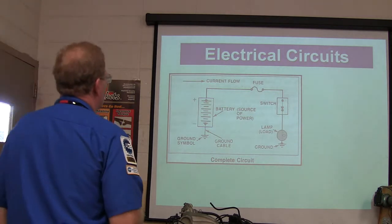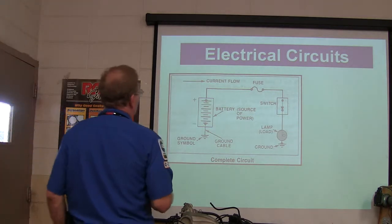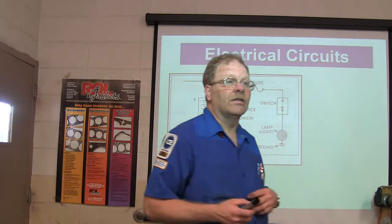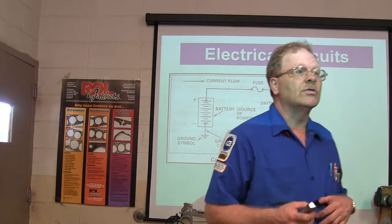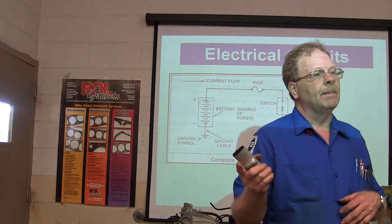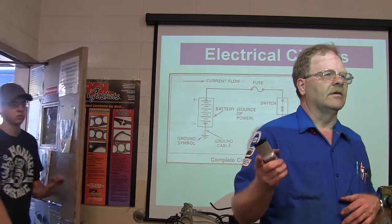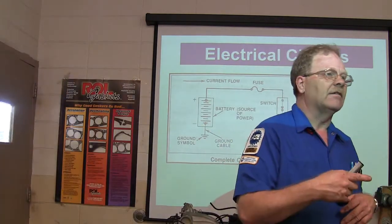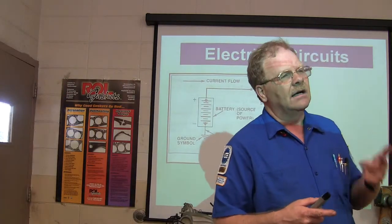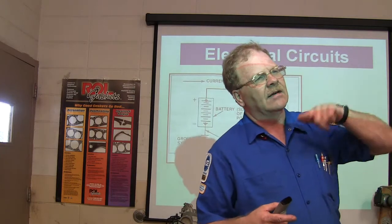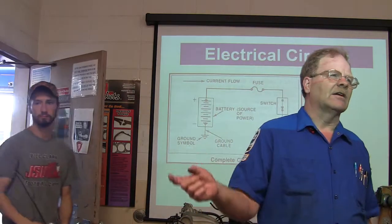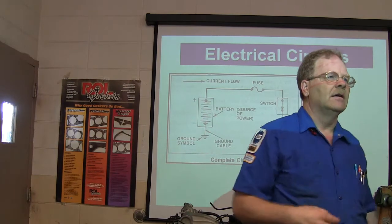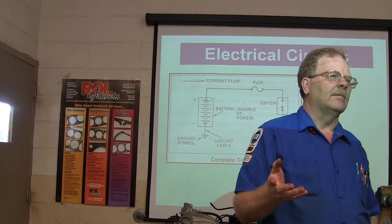Current flow goes which way? According to conventional theory, it goes from positive to negative. According to electronic theory, it starts from negative and goes to positive. But since you've got an electron jumping from atom to atom on the valence ring, you've got to know what the valence ring on an atom is.